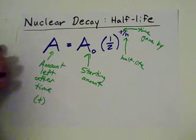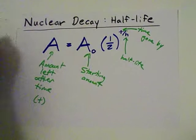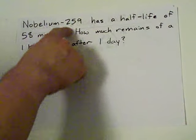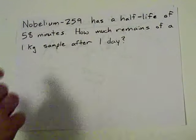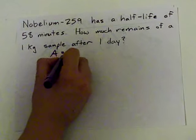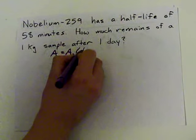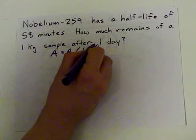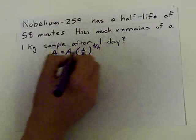We use this formula in the following way. Here's a sample of Nobelium-259. It's got a half-life of 58 minutes. How much remains after one day, if you start with a one kilogram sample? Well, the amount remaining is the amount you start with, times a half to the power of T over H. Where this is the amount of time gone by, and this is the half-life.